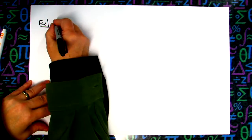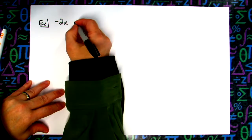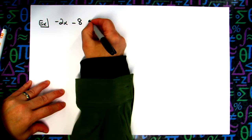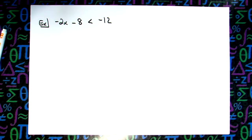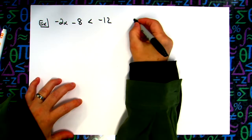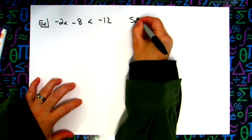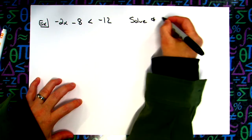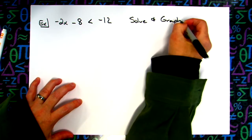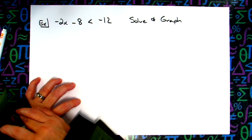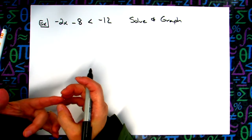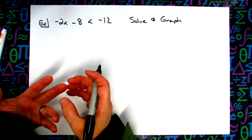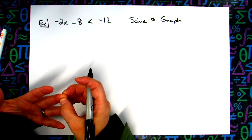If you have something like negative 2x minus 8 is less than negative 12, they're going to ask you to do two things: solve it and graph it. We previously graphed with open and closed dots, and also with square brackets and curvy brackets.